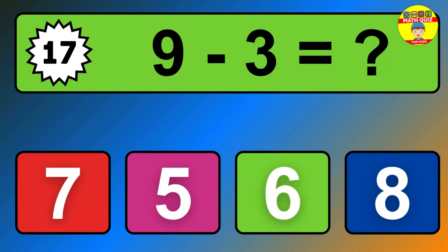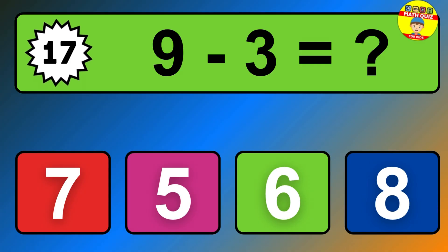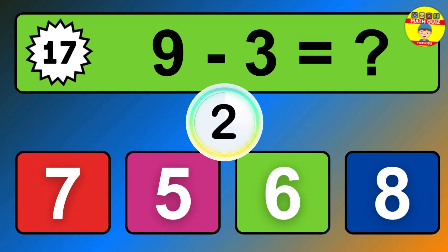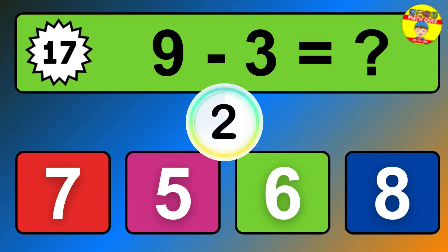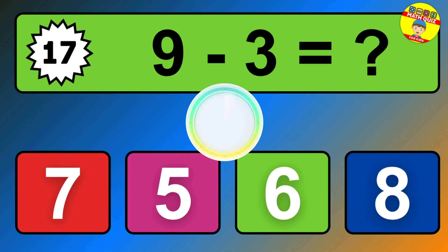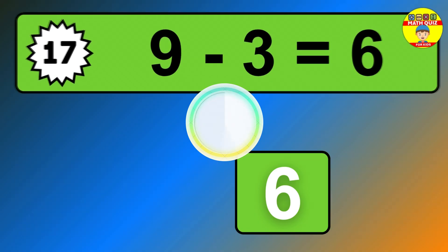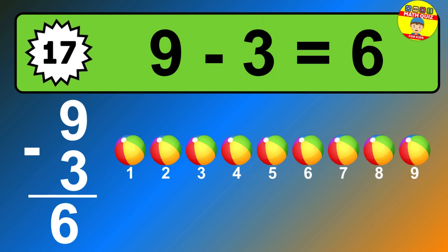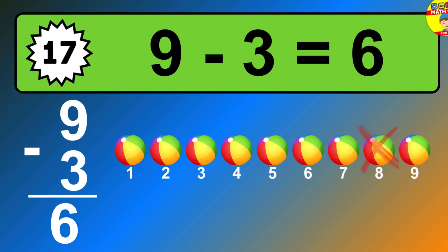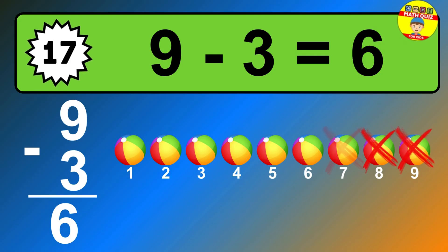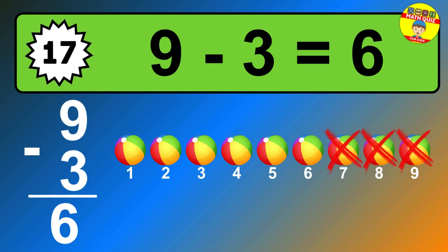Question 17. 9 minus 3 equals what? So the answer is 9 minus 3 is 6. Let's count it. 1, 2, 3, 4, 5, 6.